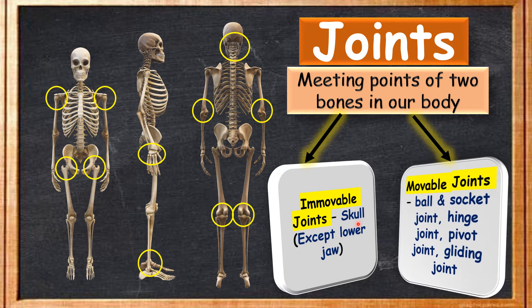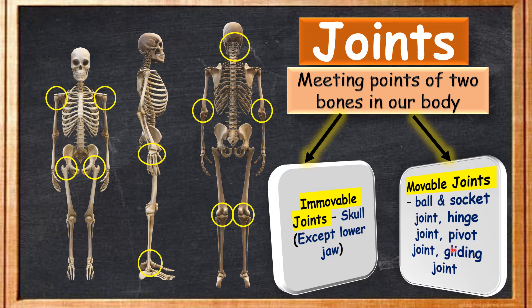We can move our fingers and legs, so these are movable joints. Movable joints are categorized into four major types: ball and socket joint, hinge joint, pivot joint, and gliding joint. In this chapter we will learn about all these different joints.